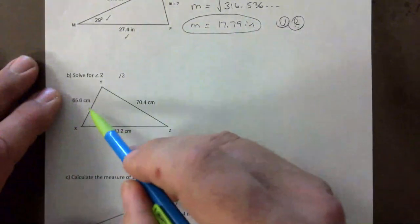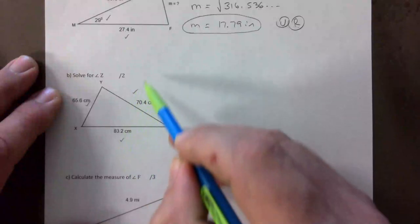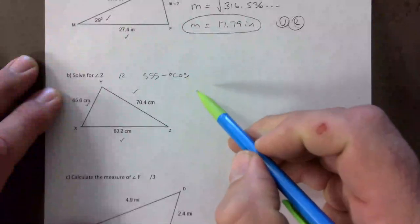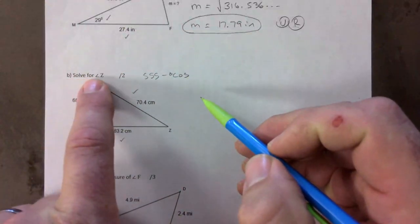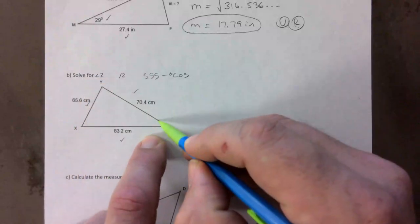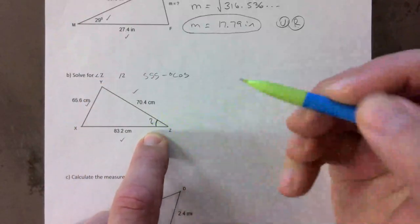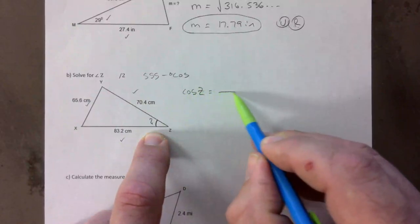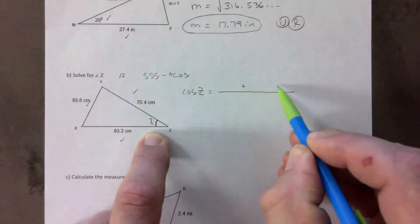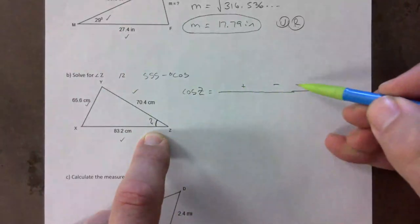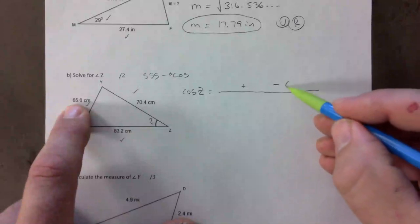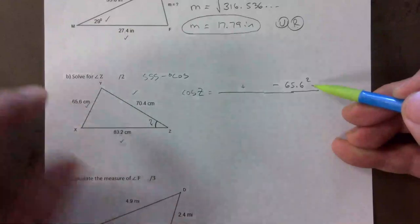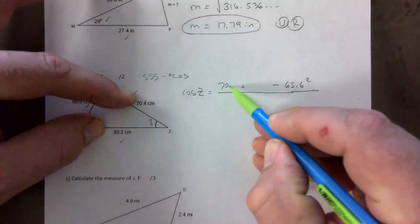What do we have here? Oh side-side-side. Still cosine law but the formula looks a little different and it's asking to solve for angle z. So it's this one right here that we want. Then we start like this: cosine of z, there's a plus and a minus and we want this side up here. And then the other two fill up the remaining spots.